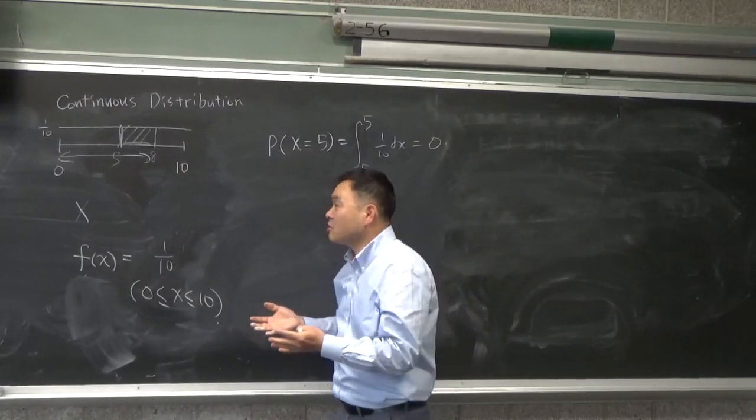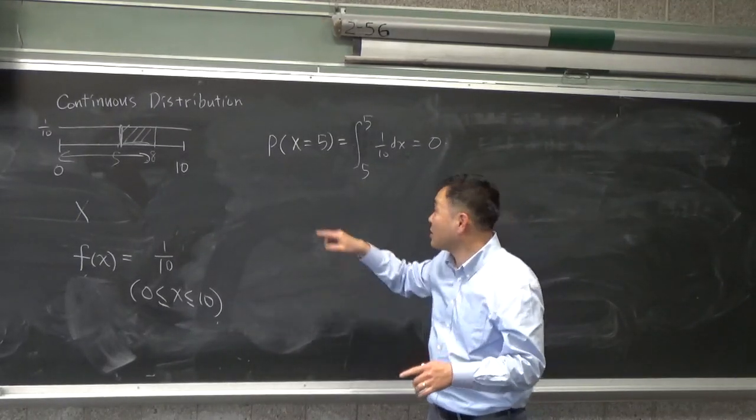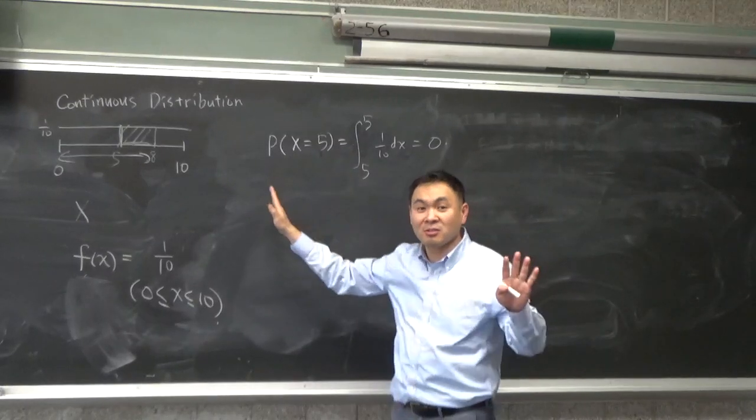So when it comes to continuous distributions, there is no such thing as a probability of something happening at a point. It's 0. It's always 0.